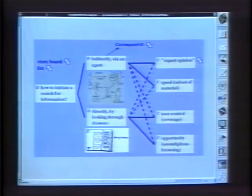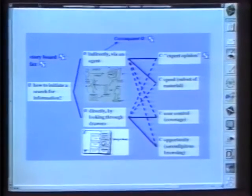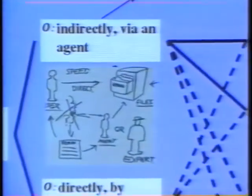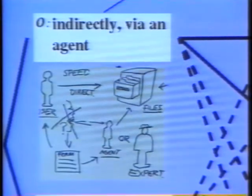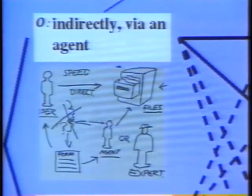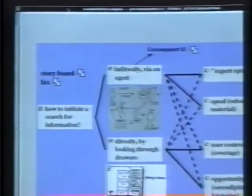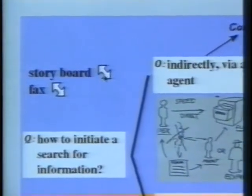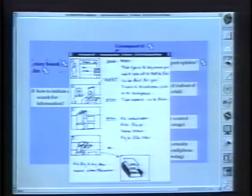Taking this one step further, we are exploring how QOC might help to organize the fragmented artifacts of design. Using an off-the-shelf software package, we have embedded various artifacts of design within a QOC record. For example, this option summarizes an idea which was explored using the sketch in a design meeting. Although the whiteboard has since been erased, that sketch was preserved here through frame-grabbed video. Other artifacts of design may be too large to display on the QOC record; however, these two icons give access to scanned-in documents which contributed to the design. For example, we can open the storyboard by clicking on its icon.